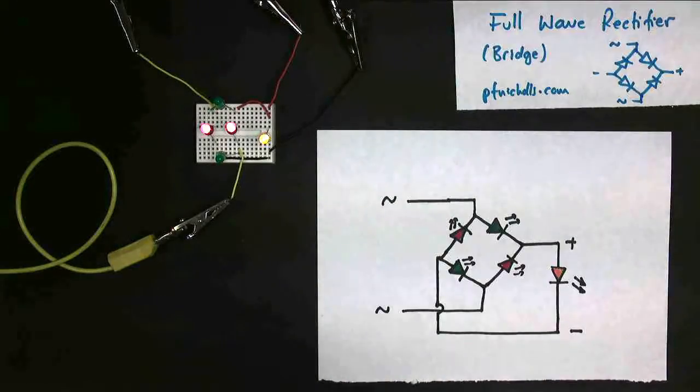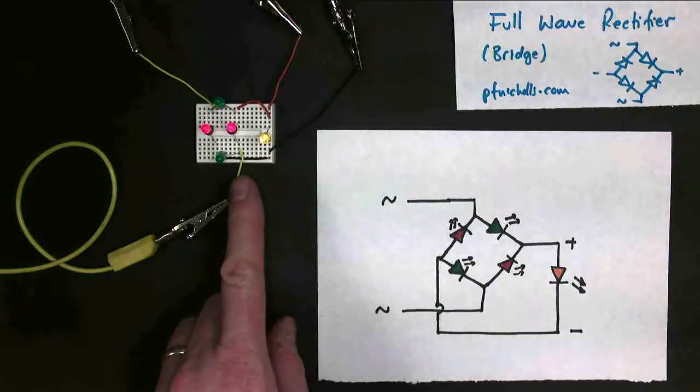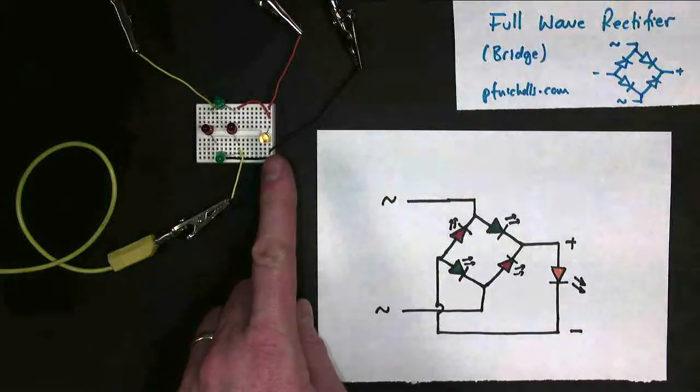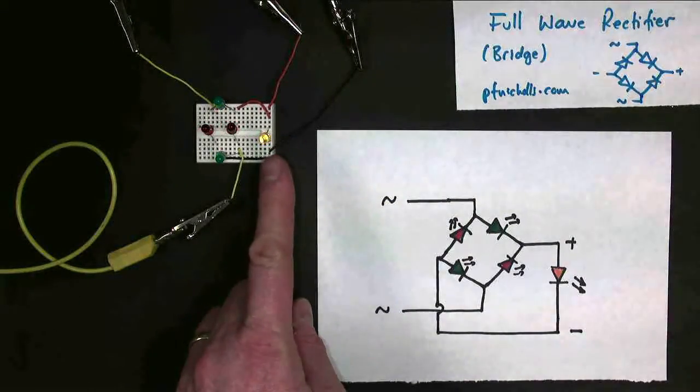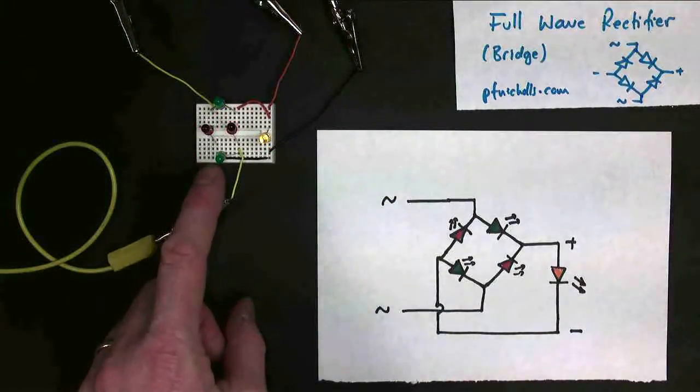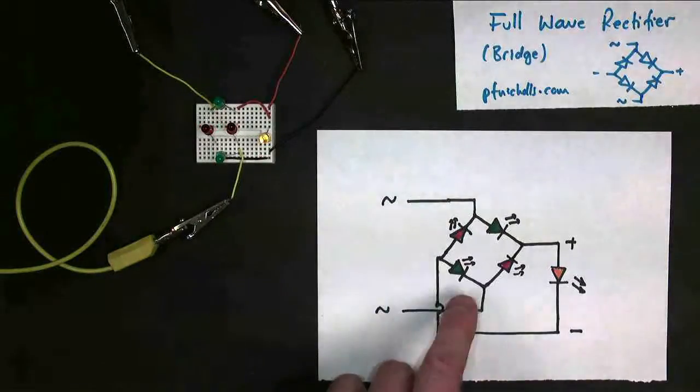To try and explain how the bridge rectifier works, I've built a new one out of LEDs instead of diodes, and I've replaced the bulb with an LED. So I've got two red LEDs, two green LEDs, and a yellow LED, just like in my diagram.